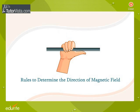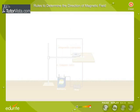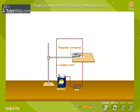Rules to Determine the Direction of Magnetic Field. We know that whenever current flows through a conductor, a magnetic field is set up around the conductor. The direction of the magnetic field produced due to a straight or circular conductor can be found with the help of certain rules.